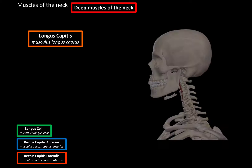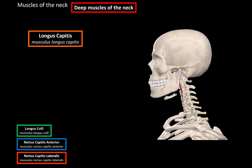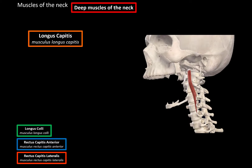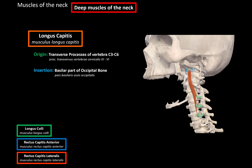The longus capitis is a tiny muscle located on the anterior side of the vertebrae. If we remove the mandible and the teeth and look at the muscles from this perspective, we'll be able to see it better. The longus capitis originates from the transverse process of vertebrae C3 to C6, and it inserts at the inferior surface of the basilar part of the occipital bone. When both sides contract, it ventrally flexes the head, and when one side contracts, it turns the head to the side.